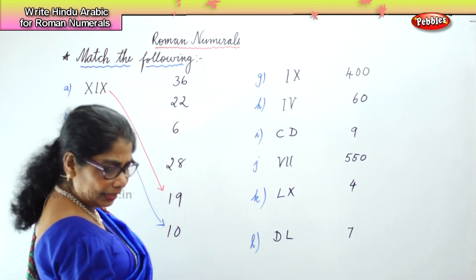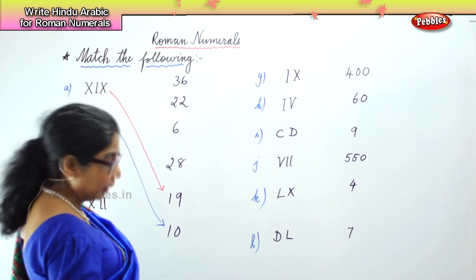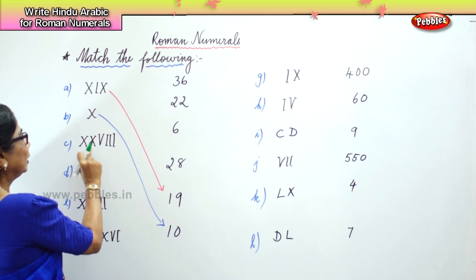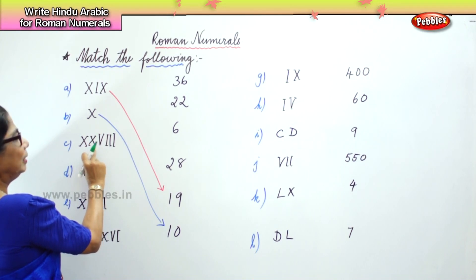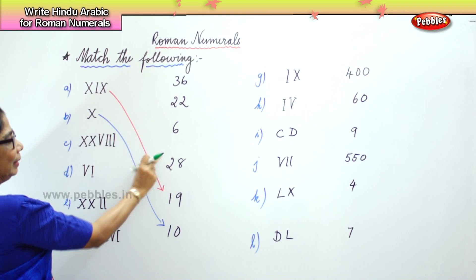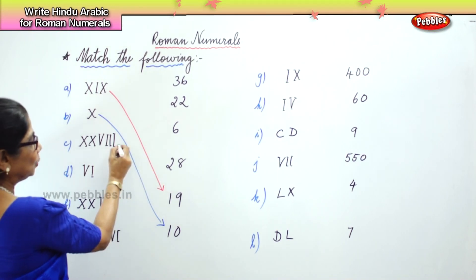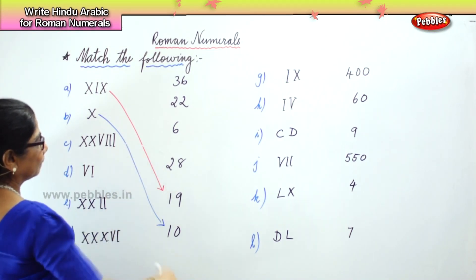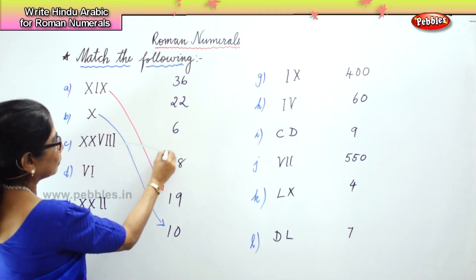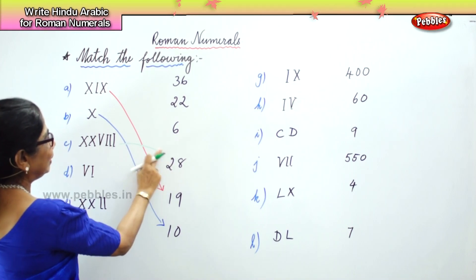It's very easy. Next we have 10, 20, 25, 26, 27, 28. And here is the 28.